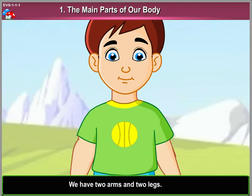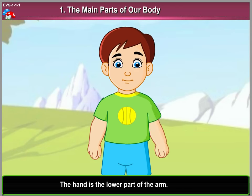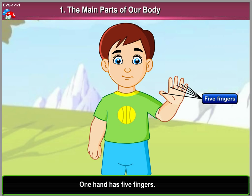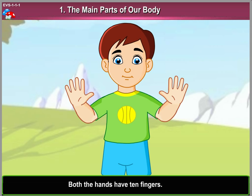We have two arms and two legs. We have two hands. The hand is the lower part of the arm. One hand has five fingers. Both the hands have ten fingers.